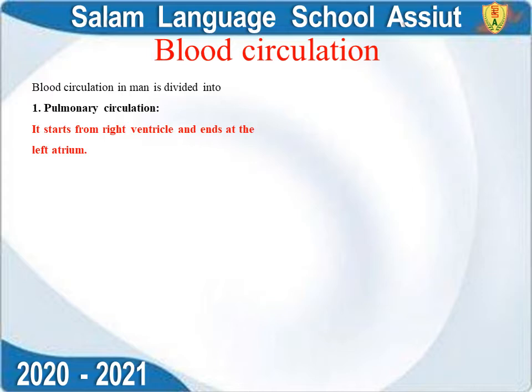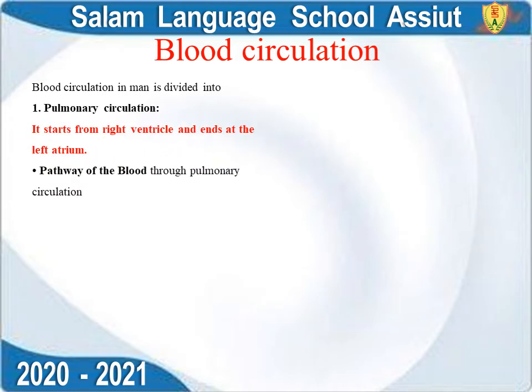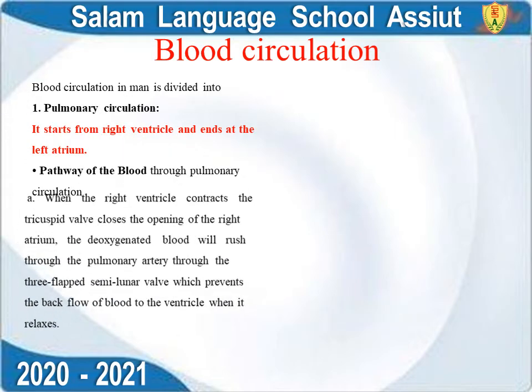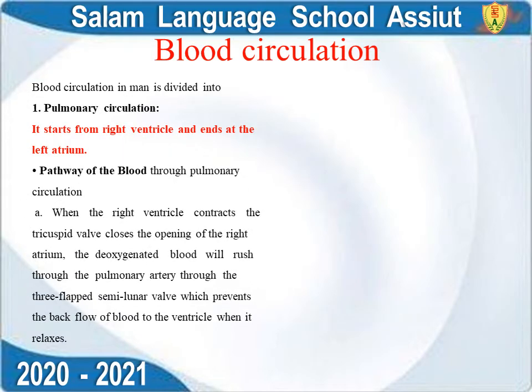Pulmonary circulation begins from the right ventricle and ends at the left atrium. To get blood from the heart to the lungs, the right ventricle contracts first. The right ventricle contains deoxygenated blood, meaning blood with carbon dioxide.